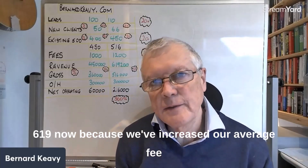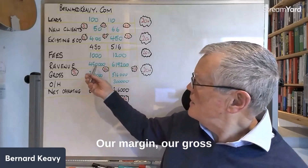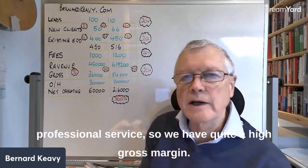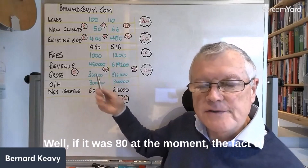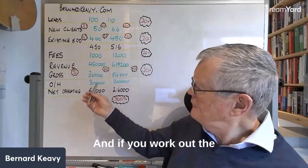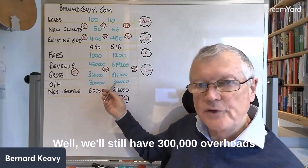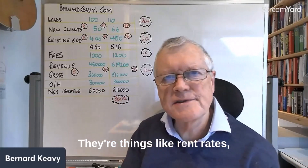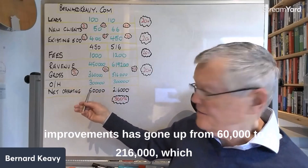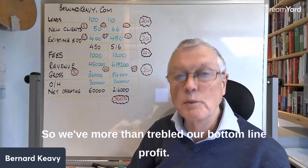Because we've increased our average fee without working on our costs at all, our direct costs won't have changed significantly, so our gross margin will automatically increase. If it was 80% at the moment — because we're a professional service with quite a high gross margin — the fact of increasing our average fee would take that up to 83%. And if you work out the numbers, our overheads won't have changed. So let's say we had 300,000 overheads originally — we'll still have 300,000 overheads, things like rent, rates, office salaries, etc. But our net operating profit on those few small improvements has gone up from 60,000 to 216,000, which is a 360% increase on the original figure. So we've more than trebled our bottom line profit.